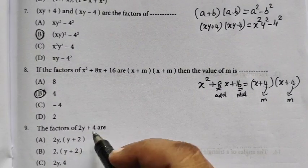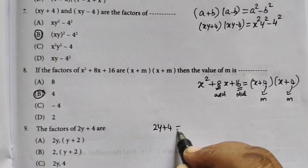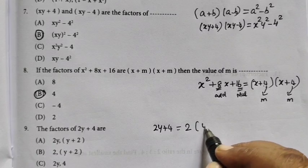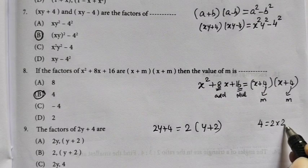The factors of 2y plus 4 are split. Then y plus 2, because 4 can be written as 2 into 2.